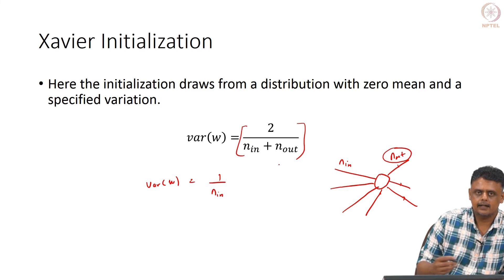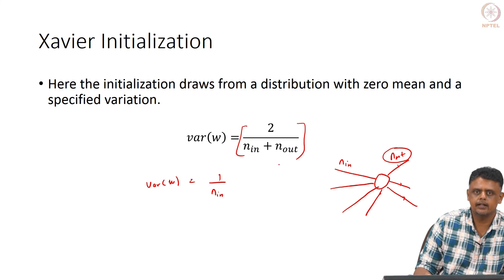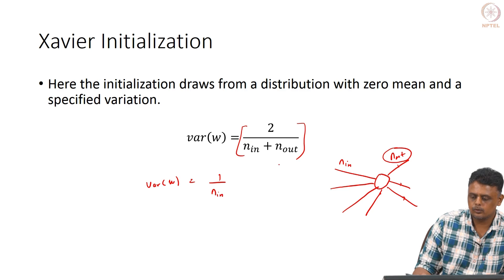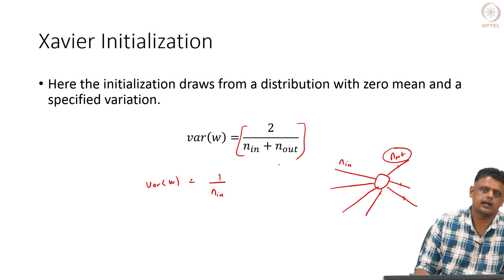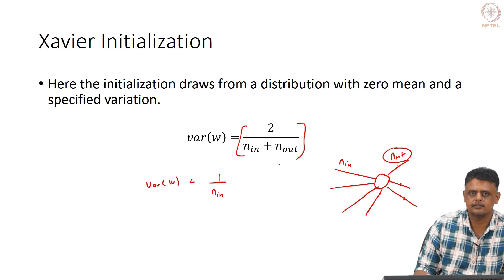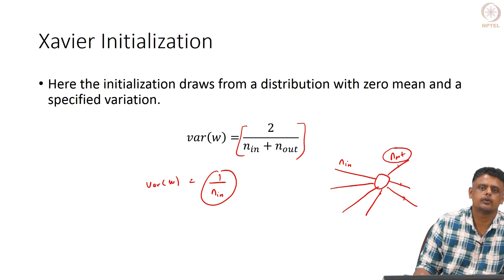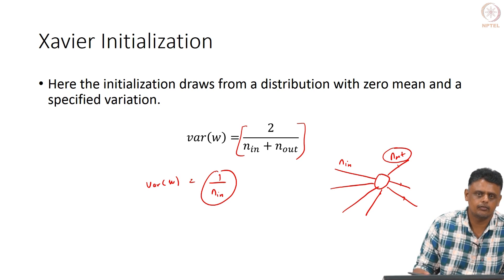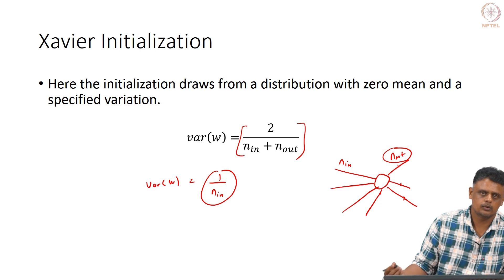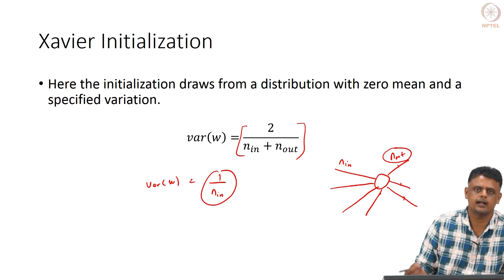In both approaches, the idea is that treating weights and features as independent means the variance of their linear combination scales with the number of terms. To account for this, the variance of the distribution from which you sample weights is scaled by an appropriate factor. Xavier initialization is very commonly used in practice, as is 1/N_in, and both give good results for fast convergence of the network.